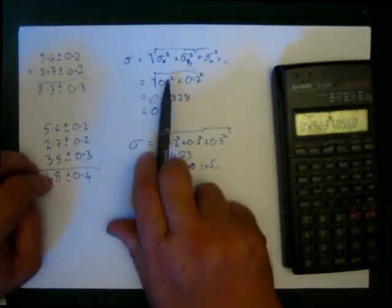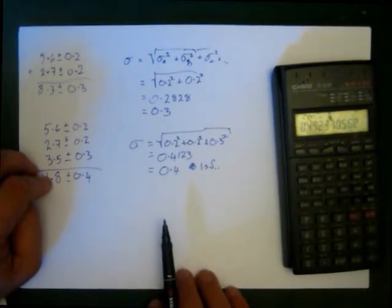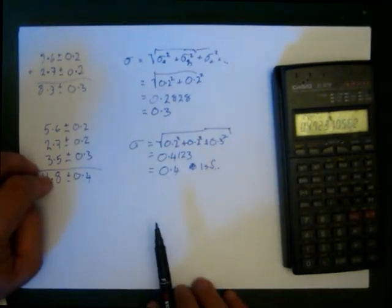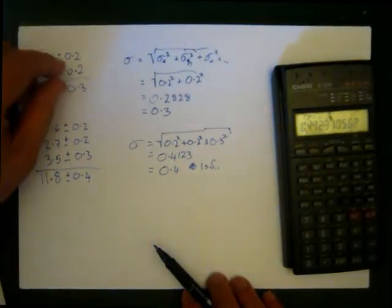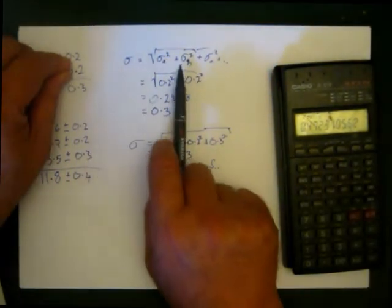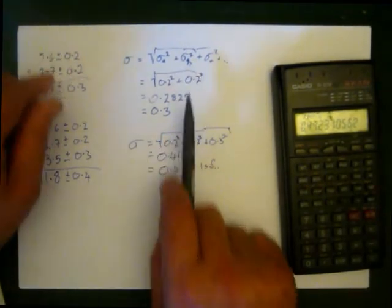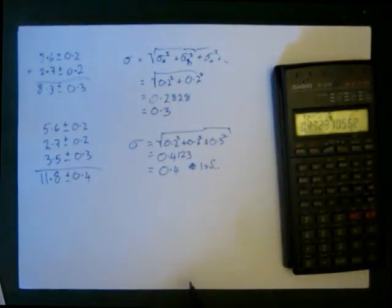If you want to know why we use Pythagoras on this, I would suggest talking to the maths department. That's their specialist area. So we're doing it differently than in high school. Instead of just adding them together, we add them together using Pythagoras, and this gives us a much more accurate uncertainty.